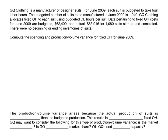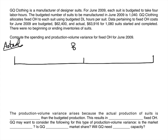Let's use our GQ Clothing example to calculate our fixed overhead variances. We draw our chart and label everything: first peg is actual fixed cost, second peg is budgeted fixed cost, and the last peg is allocated fixed cost — standard quantity times standard price. Looking at the problem, our actual fixed costs are $63,916 and our budgeted fixed costs are $62,400.